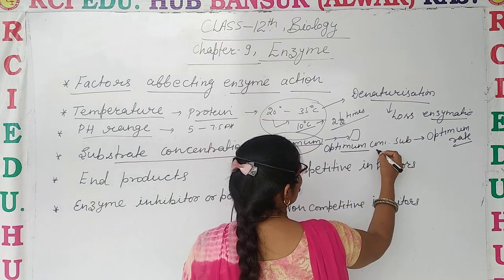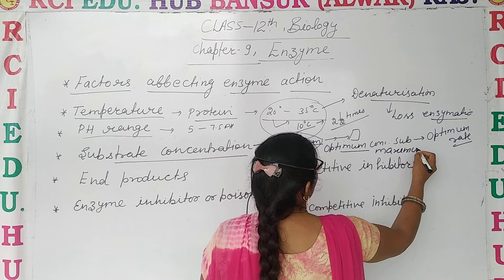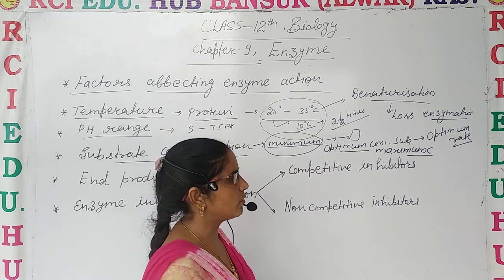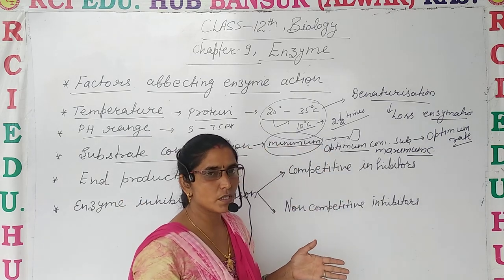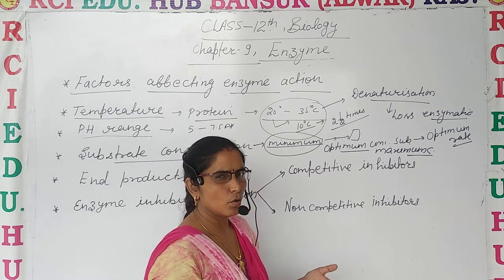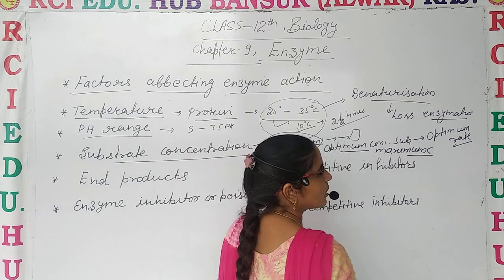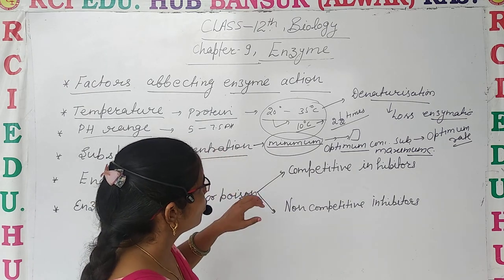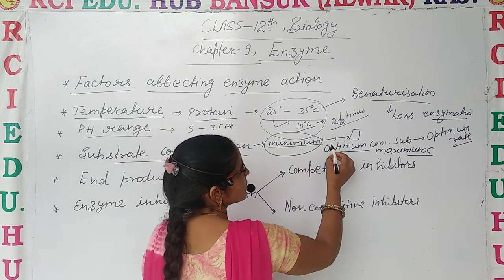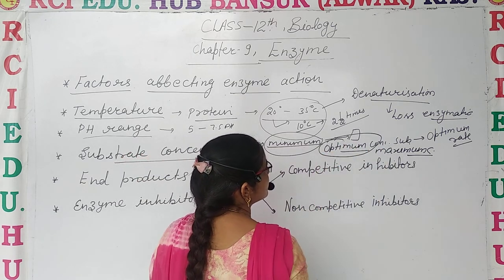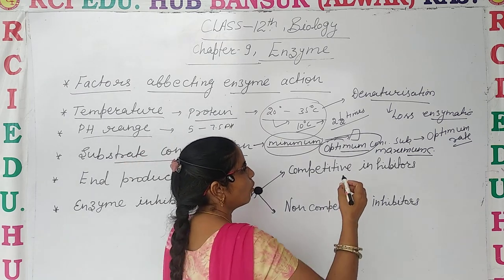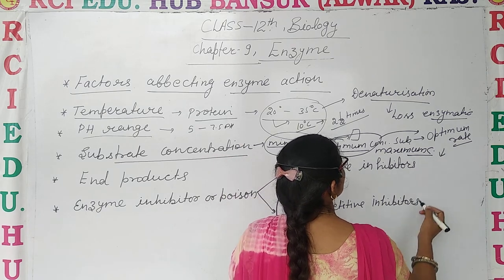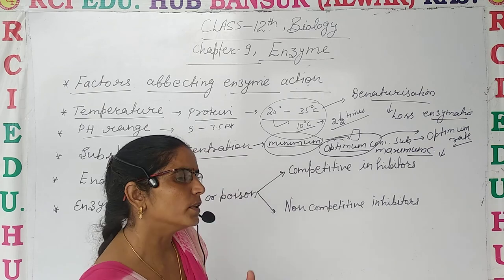The third condition is maximum substrate concentration. Maximum concentration of substrate can also reduce enzymatic activity because substrates are present in large amounts but enzymes are not. If there are not enough enzymes, they cannot bind with the substrate, and the reaction cannot proceed. The optimum concentration of substrate is what allows the maximum efficiency of the enzymes.